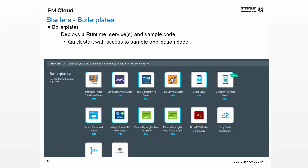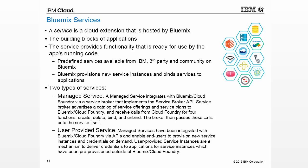A boilerplate is a container for an application and its associated runtime environment and predefined services for a particular domain. You can use a boilerplate to quickly get up and running. For example, you can select the mobile cloud boilerplate to host mobile and web applications and accelerate development time of server-side scripts using the mobile app template and SDK. A service is a cloud extension hosted by Bluemix that provides functionality ready to use by the app's running code. Predefined services provided by Bluemix include database, messaging, push notifications for mobile apps, and elastic caching for web apps.